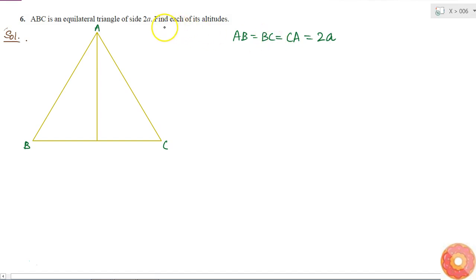Then I have to find each of its altitudes. What is the altitude? Altitude is the line drawn from one vertex of the triangle to the opposite side such that it is perpendicular to the opposite side. That means if AD is my altitude, then AD will be perpendicular to BC.